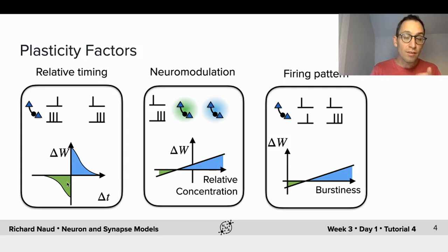Neuromodulation is another very important factor. No matter what type of electrical activity we have on both sides of the synapse, we can go from LTD to LTP by changing the relative concentration of neuromodulators that are deployed at the synapse. These neuromodulators are serotonin, acetylcholine, and dopamine.